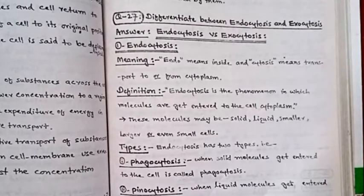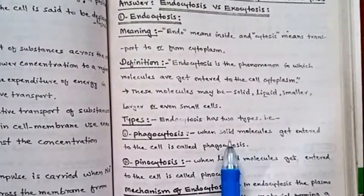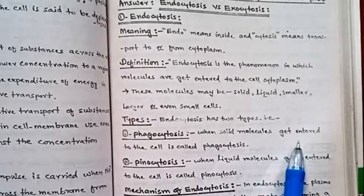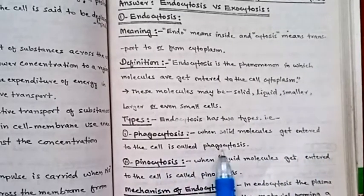Endocytosis has two types: phagocytosis and pinocytosis. Phagocytosis is when solid molecules get entered into the cell.